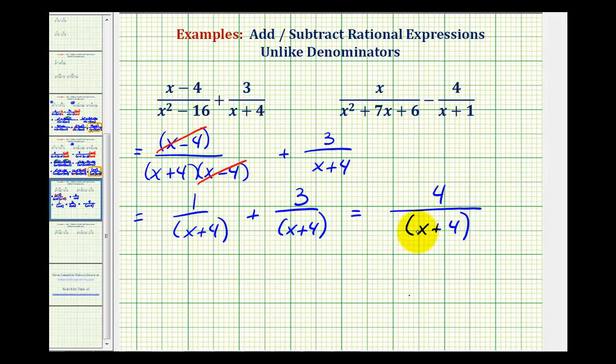Now we do need to be careful here. We cannot simplify this four and this four because we cannot simplify across this addition. So this would be our simplified fraction, though sometimes you will see it where, because we have one factor in the denominator, the parentheses are dropped. So either of these two forms would be acceptable.